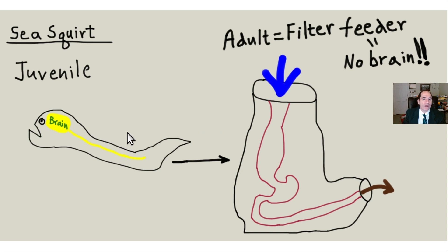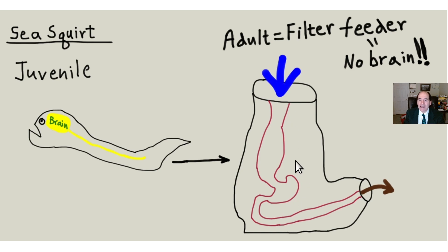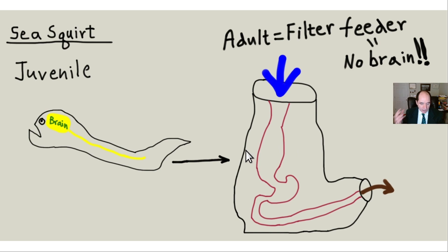This is a drawing of a sea squirt. During its juvenile phase it swims around like a tadpole and has a brain. In its adult phase it attaches to a rock, becomes a filter feeder, and its brain is entirely reabsorbed — because you don't need a brain if you just sit around all day. This is also part of the story of why exercise makes you smarter and is very good for the brain.